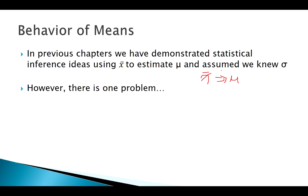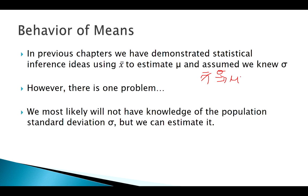Our goal is to use X-bar to estimate mu, but in the process we were assuming we know Sigma. However, we need mu to calculate Sigma in the first place. So if we don't know mu, how would we know Sigma? There's a logical contradiction there. Most of the time in practice, we don't actually know Sigma.